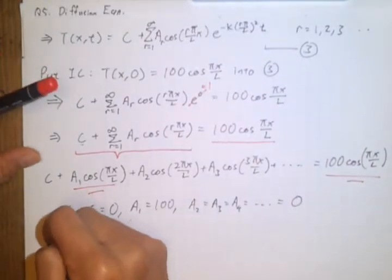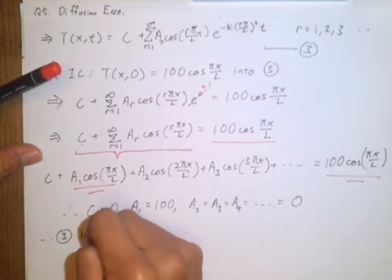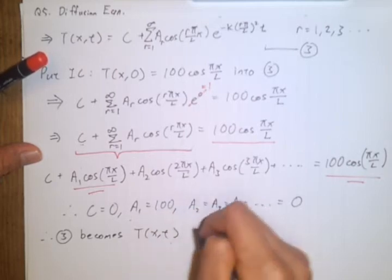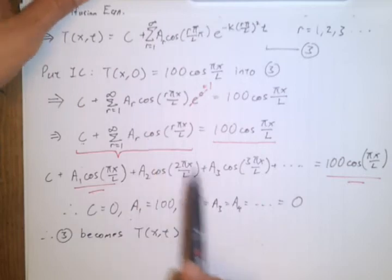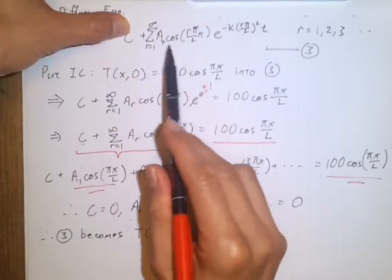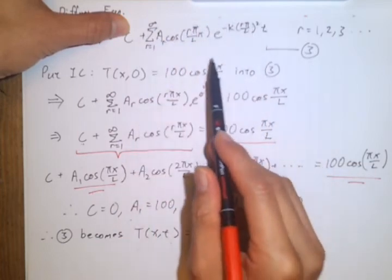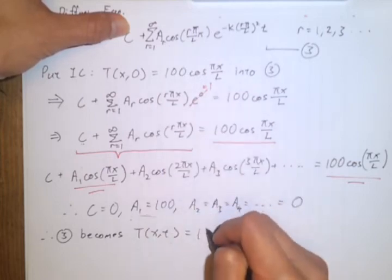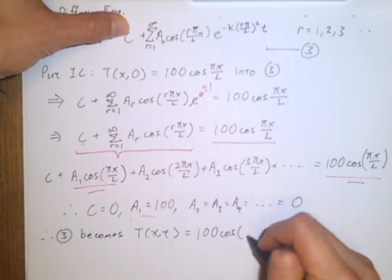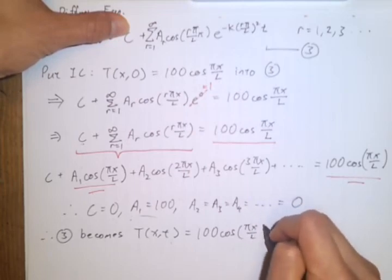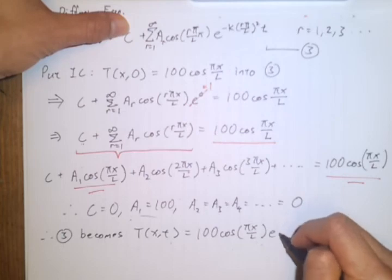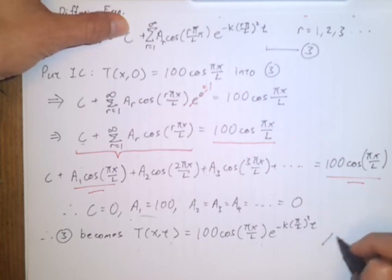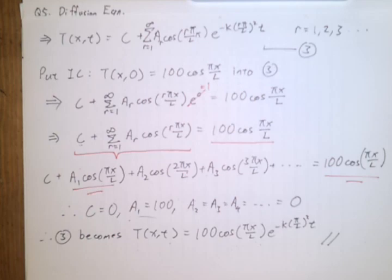So equation 3 becomes the final solution. With C equals 0 and the only non-zero term being when r equals 1 with A_1 equals 100, the solution is: T equals 100 cos(pi x over L) times e to the power of minus k(pi over L) squared t. This is the solution for question 5.